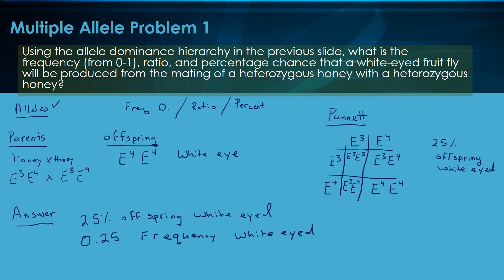If we look up above here, out of four potential types of offspring, one to three are white-eyed. Three to one are going to be honey. We get a one to three ratio of white-eyed to honey. There we go. Okay, let's see what we're going to learn next.